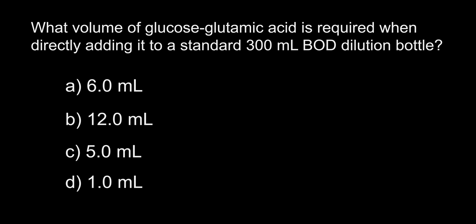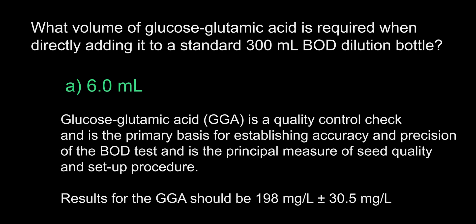What volume of glucose glutamic acid is required when directly adding it to a standard 300 milliliter BOD dilution bottle? A. 6 milliliters. B. 12 milliliters. C. 5 milliliters. D. 1 milliliter. The answer is A, 6 milliliters. The answer is 6 milliliters because that is the specified amount as designated by standard methods. If you don't know what standard methods is, the full title is standard methods for the examination of water and wastewater. All wastewater lab testing in the United States needs to follow the methods set forth by that book in order to be compliant with the EPA.